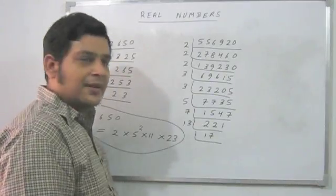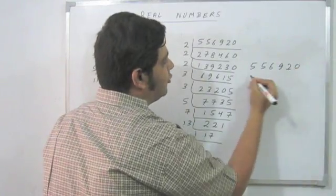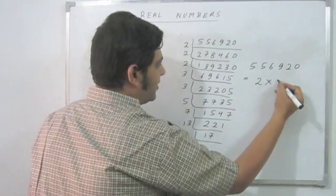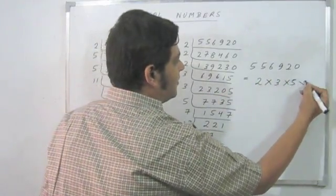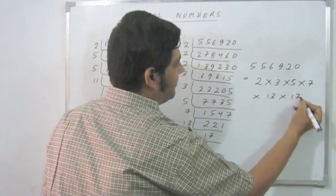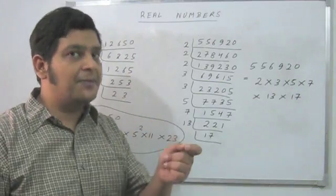A lot of prime numbers are occurring here, and that is why I can say that 556920: first of all, what all primes occur? 2, 3, 5, 7, 13, and 17.